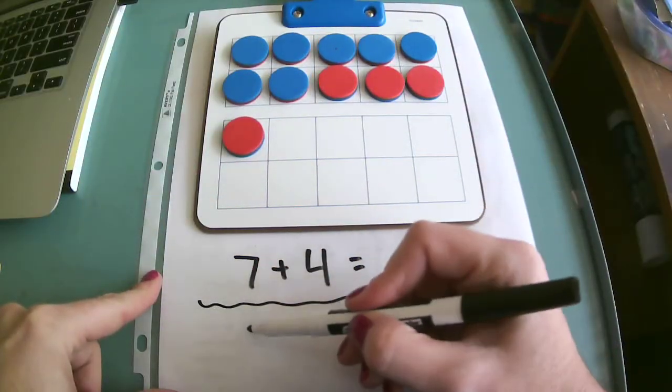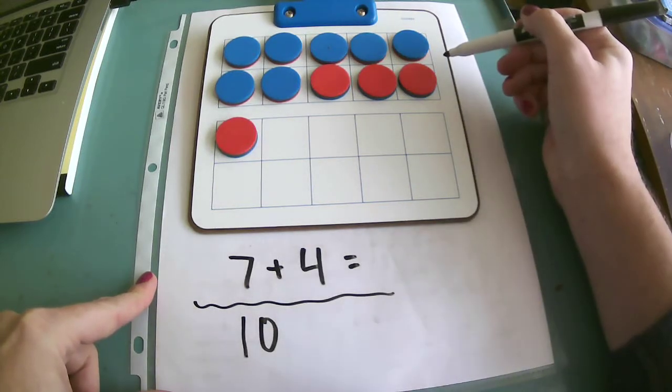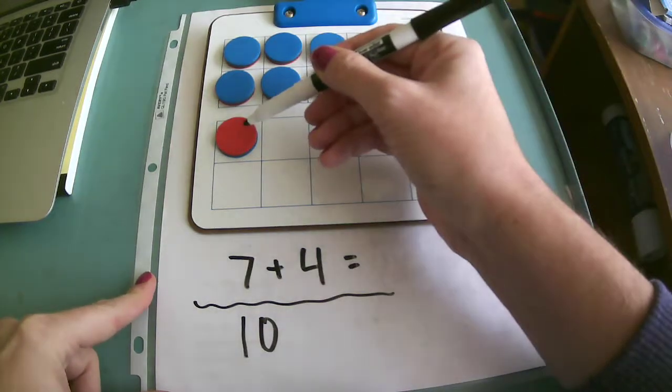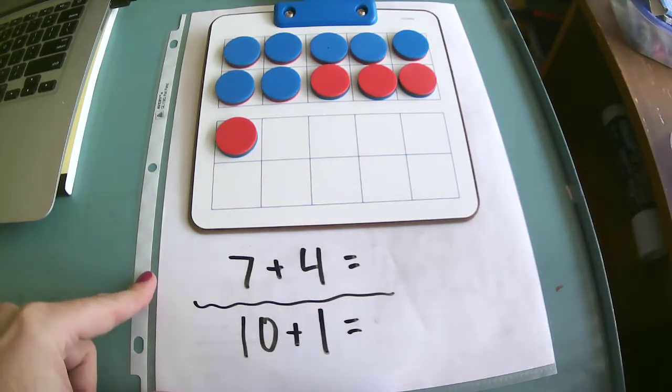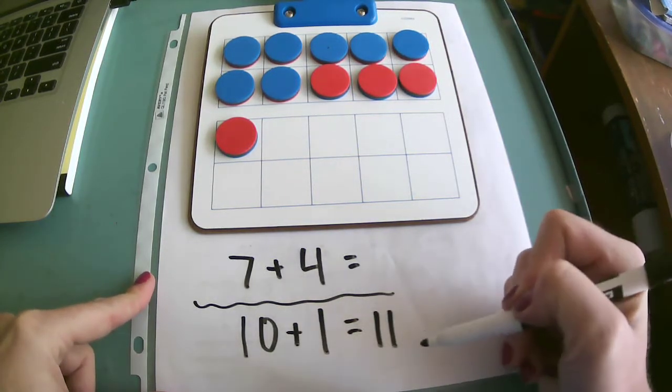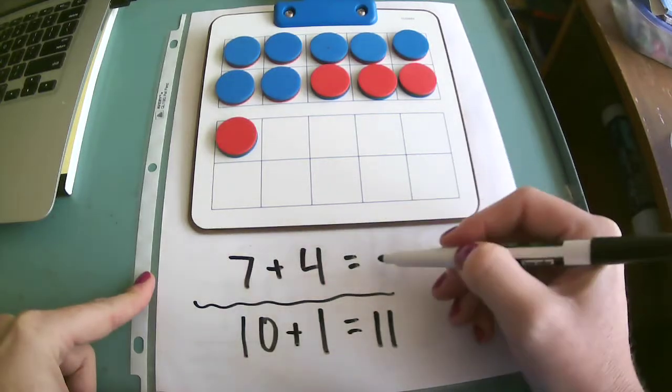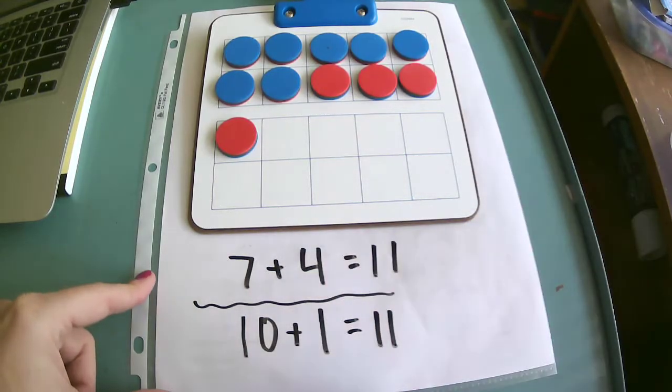So now I know I have the number 10 because my first 10 frame is filled up, and I only have one left in my second 10 frame, which I easily know is 11. So 7 plus 4 must also equal 11.